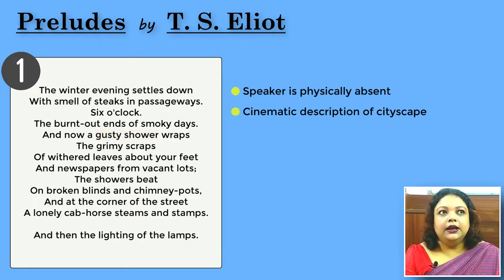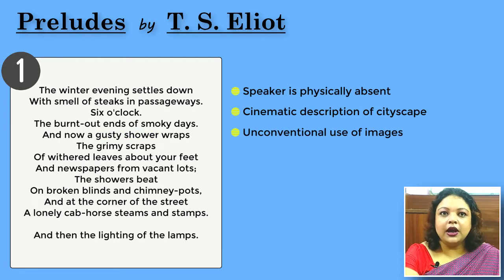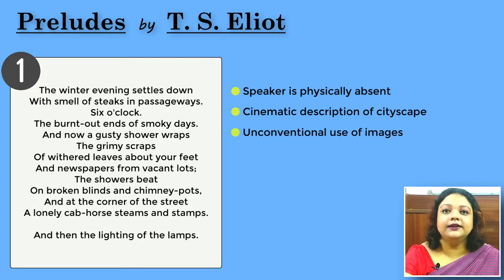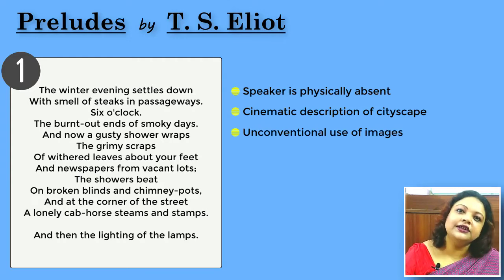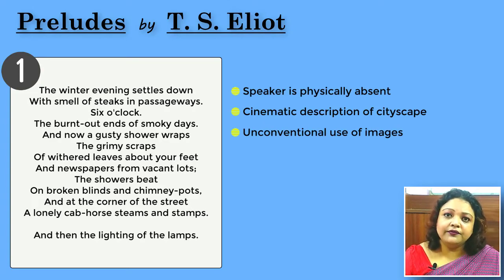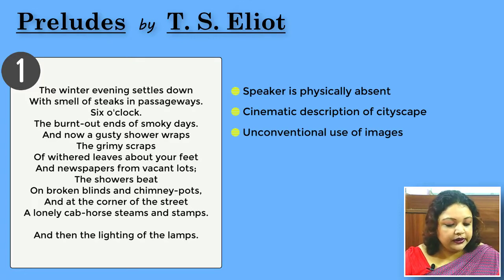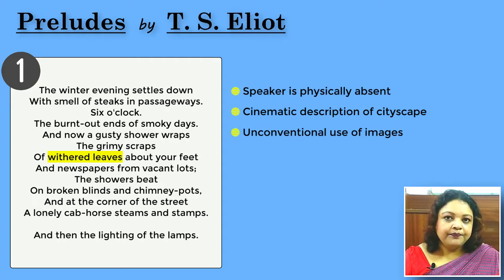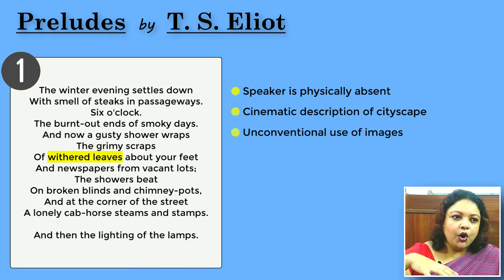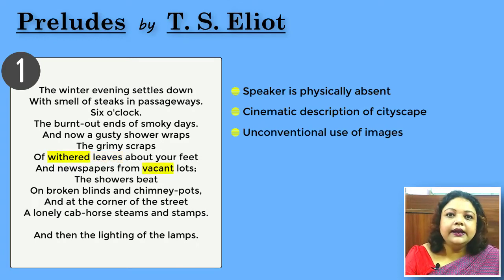Here you are repeatedly given images which are taken out of their traditional poetic significance. You are having a new look at the words and images which have been used traditionally in a different way by conventional or previous poets. 'The grimy scraps of withered leaves about your feet and newspapers from vacant lots. The showers beat on broken blinds and chimney pots.' Look at the objects he is referring to here — withered leaves, broken blinds, because it's winter and the fall is over, leaves scattered all about the streets.